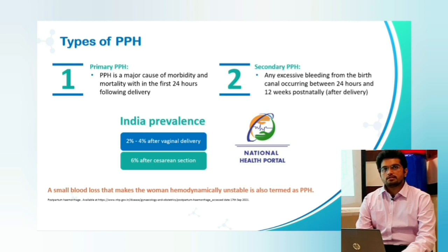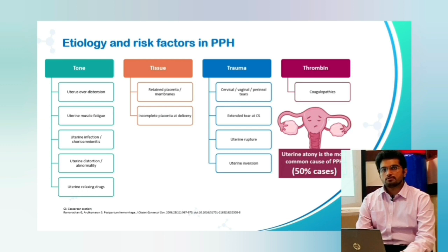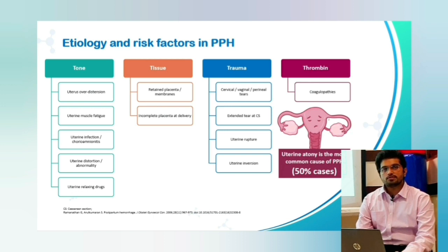The etiology and risk factors in postpartum hemorrhage involve the four T's: tone, tissue, trauma, and thrombin. In tone, there is uterine over-distension, uterine muscle fatigue, uterine infection or chorioamnionitis, or uterine relaxing drugs. In tissue, there is retained placenta or membranes. In trauma, there can be cervical, vaginal, or perineal tears, extension tears at caesarean section, uterine rupture, or uterine inversion. In thrombin, there is coagulopathy. Uterine atony is the most common cause of postpartum hemorrhage, accounting for around 50–60% of PPH cases.